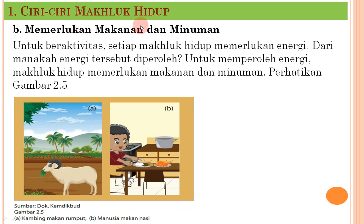Ciri makhluk hidup selanjutnya adalah memerlukan makanan dan minuman. Untuk beraktivitas dan melakukan kegiatan, setiap makhluk hidup memerlukan energi yang diperoleh dari makanan dan minuman. Misalnya kambing makan rumput untuk memperoleh energi, sedangkan manusia misalnya makan nasi dan lain-lain.